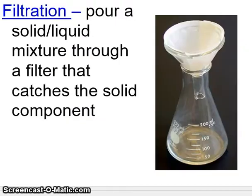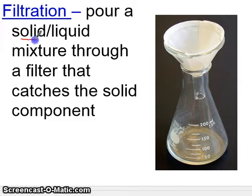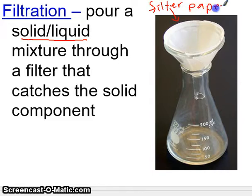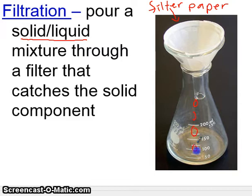There are five of these separation techniques. The first is quite simple — it's called filtration. In filtration, we usually have a mixture that has a solid and a liquid in it, and the way to separate them is by pouring it through a special piece called a filter paper. This filter paper will catch the solid components, and the liquid will drip down into the flask.